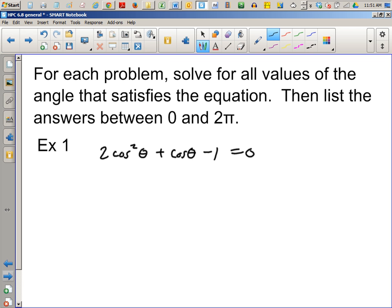So, we have 2 cosine squared theta plus cosine theta minus 1 equals 0. So, you'll notice right off the bat, this is already more complicated. You've got a cosine squared and a cosine in the same problem. So, what I would recommend doing is just pretend it's like doing 2x squared plus x minus 1 equals 0. You would factor it like 2x minus 1 times x plus 1.